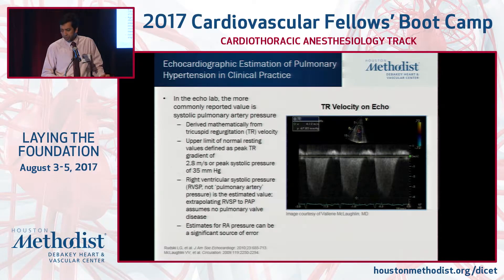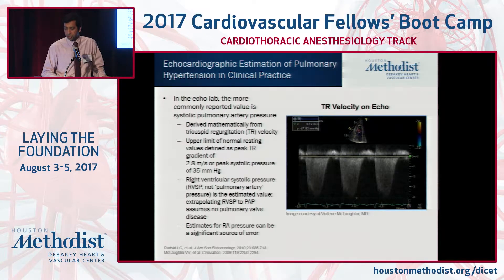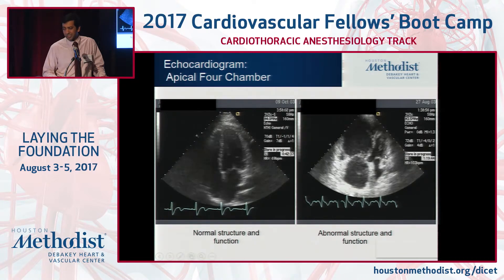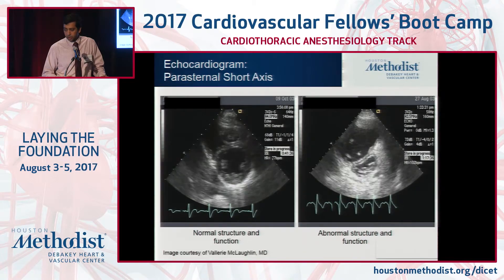This is how you diagnose PH on echo, where you look at the tricuspid jet and calculate your pressures — the RV systolic pressure, which would be equal to the pulmonary artery systolic pressure in the absence of pulmonary stenosis. This is how an echo with a patient with severe pulmonary hypertension and RV dysfunction looks: the RV is markedly enlarged with a small LV and both systolic and diastolic collapse of the LV, seen in the short axis.